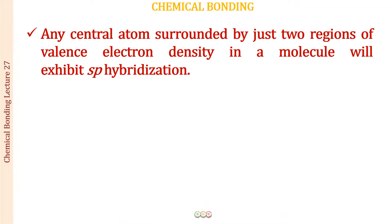The important conclusion from this discussion is that whenever a central atom is surrounded by just two regions of valence electron density in a molecule, that central atom is going to exhibit SP hybridization. So: four regions of valence electron density → SP3 hybridized; three regions → SP2 hybridized; two regions → SP hybridization. Let us see a few more examples.